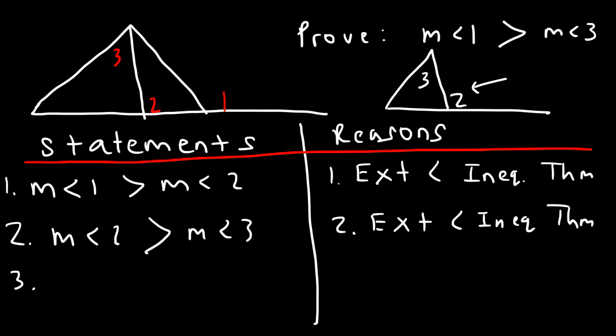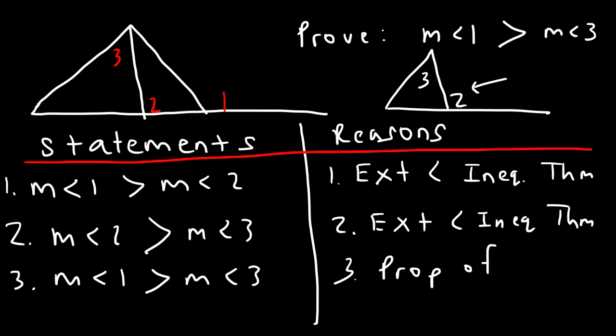So if angle 1 is greater than angle 2, and if angle 2 is greater than angle 3, we can therefore make the conclusion that angle 1 must be greater than angle 3. We could use the property of inequalities: if 1 is greater than 2, and 2 is greater than 3, then 1 has to be greater than 3. That's how you use the exterior angle inequality theorem in a two-column proof.